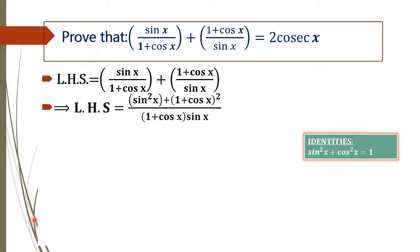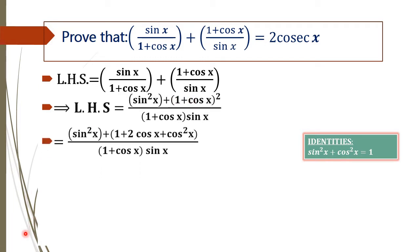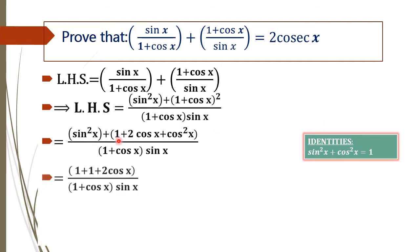We are not touching the denominator now, and we are expanding and simplifying the numerator to get our required result. By expanding the numerator we get sin square x plus 1 plus 2 cos x plus cos square x. Now, applying the identity sin square x plus cos square x equals 1, we get 1 plus 1 plus 2 cos x.